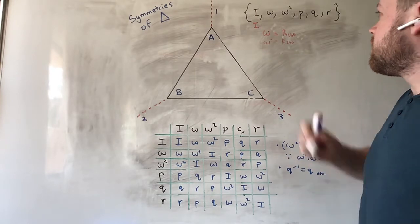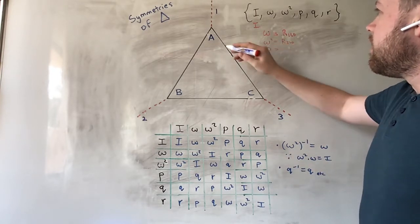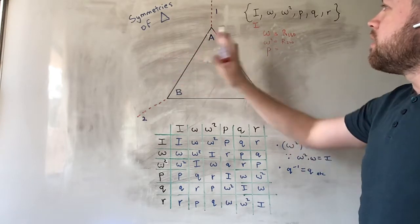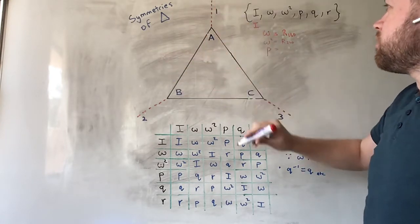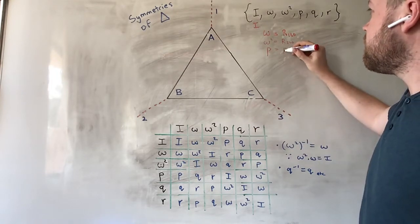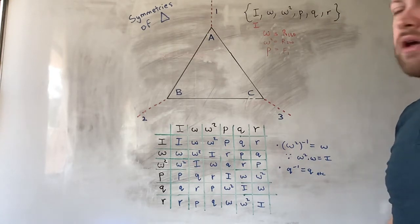So, that's omega and omega squared. P, I'm labelling flipping over the line of symmetry labelled 1. So, you could call that flipping over axis 1.